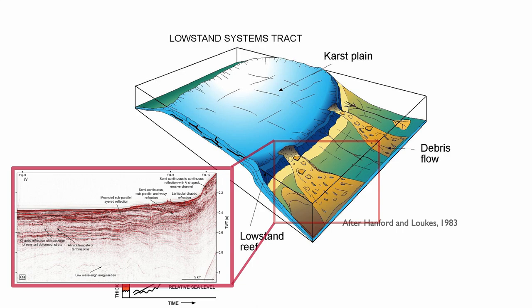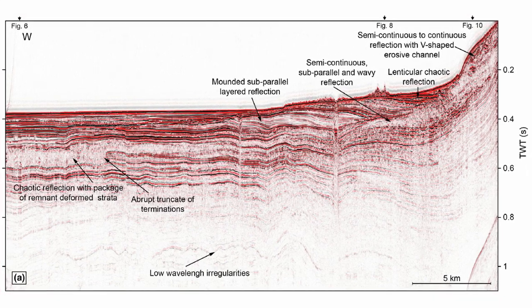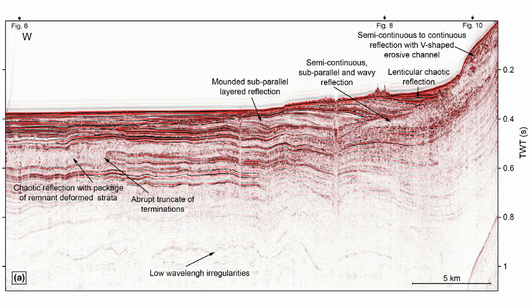Another feature is that during low stand, the slope of the carbonate system is typically not very stable, so you have a lot of potential for debris flow and mass transport deposits. Here's a seismic example: you can see chaotic reflections with remnants of deformed strata, abrupt truncations of strata, mounded structures, semi-continuous subparallel and wavy reflections, chaotic lenticular reflections, and even V-shaped erosion channels visible upslope.